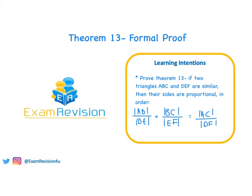Hi guys, in today's video we're going to be looking at Theorem 13, which states that if two triangles ABC and DEF are similar, then their sides are proportional in the order AB over DE equals BC over EF equals AC over DF.